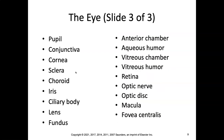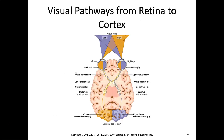These are the anatomical terms you're going to want to make sure you know: pupil, conjunctiva, cornea, sclera, choroid, iris, ciliary body, lens, fundus, anterior chamber, aqueous humor, vitreous chamber, vitreous humor, retina, optic nerve, optic disc, macula, and fovea centralis.